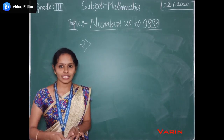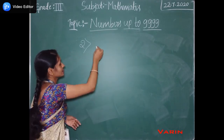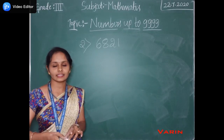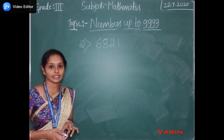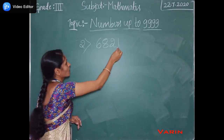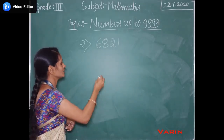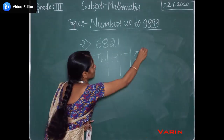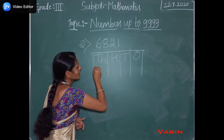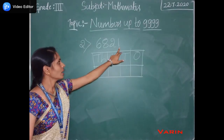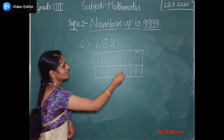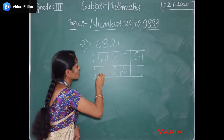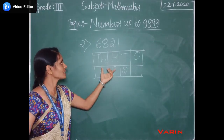Write the place value of each digit in the number 6821. We have to write the place value of each digit. First, let us analyze this number in the place value chart. This is the place value chart for a 4-digit number. In this, 1 is present in the ones place, 2 is in the tens place, 8 is in the hundreds place, and 6 is in the thousands place.